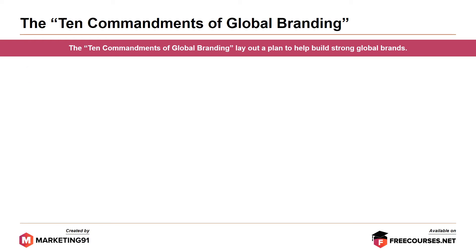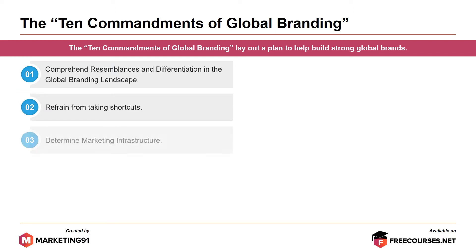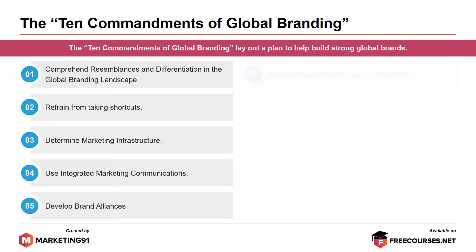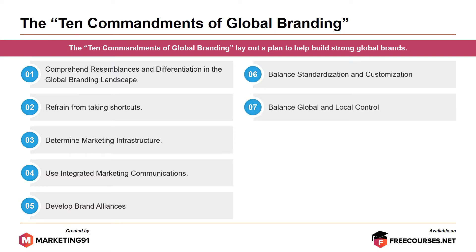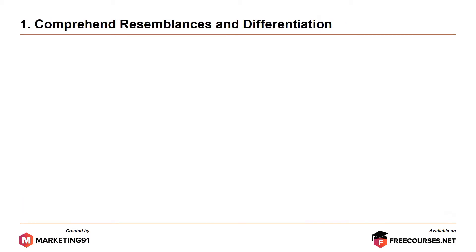The 10 commandments are: first, comprehend resemblances and differentiation in the global branding landscape; second, refrain from taking shortcuts; third, determine marketing infrastructure; fourth, use integrated marketing communication; fifth, develop brand alliances; sixth, balance standardization and customization; seventh, balance global and local control; eighth, establish operable guidelines; ninth, implement a global brand equity measurement system; and tenth, leverage brand elements — that means taking advantage of brand elements. Now let's look at each one of them briefly along with examples.